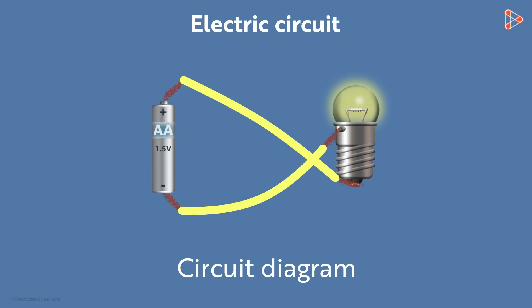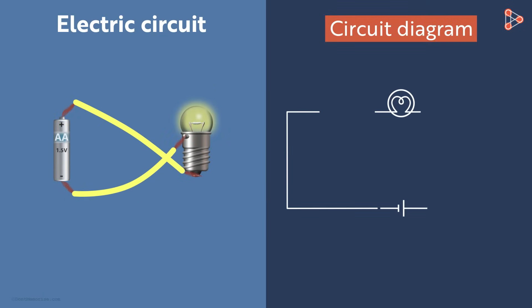If you look at this circuit, the positive terminal of the cell which was initially connected to this terminal of the bulb is now connected to the other terminal. Similarly, the negative terminal which was initially connected to this terminal is now connected to this one. So how will the circuit diagram of this circuit look like? This is the circuit diagram.